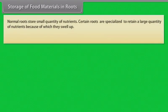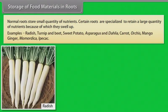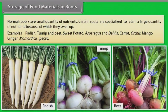Storage of food materials in roots: Normal roots store small quantities of nutrients. Certain roots are specialized to retain a large quantity of nutrients, because of which they swell up. Examples: radish, turnip, beet, sweet potato, asparagus, dahlia, carrot, mango ginger, Momordica, ipecac.